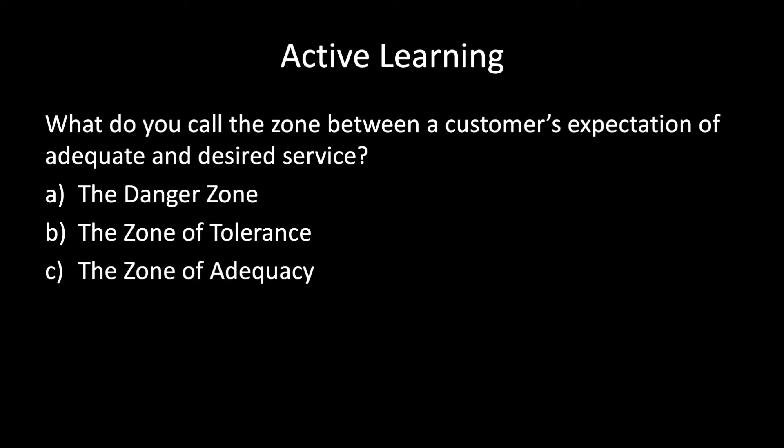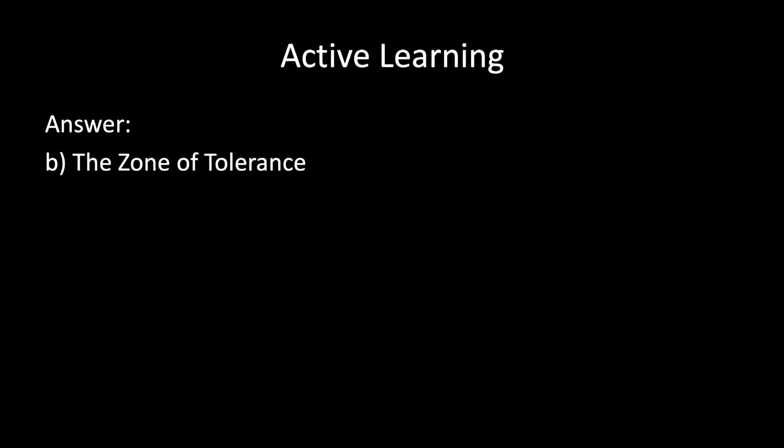Let's pause for a little bit of active learning and then wrap up. What do you call that zone between the customer's expectation of adequate and desired service? Is it the danger zone, the zone of tolerance, or the zone of adequacy? If you were paying attention, it was the zone of tolerance — that point between the adequate service level expectation and the desired service level expectation.